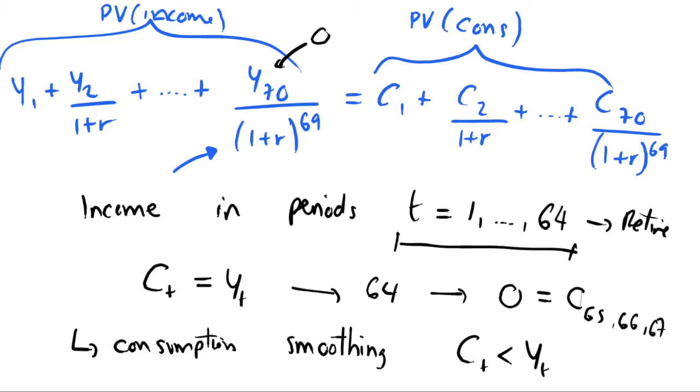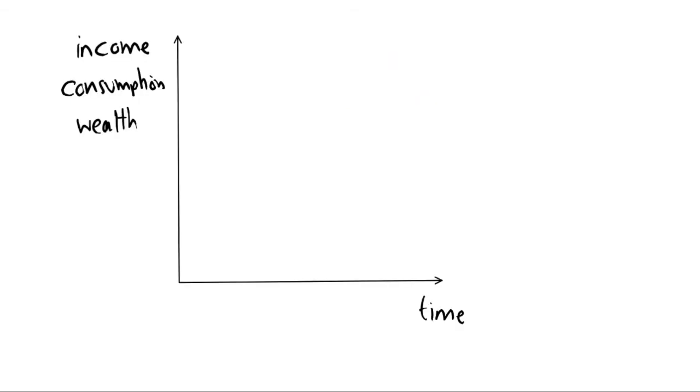And that's sort of the thought process behind this life cycle hypothesis, is that we smooth our consumption. Even in period one we want to be saving some of that money for the future, and we can think of that as putting money into a pension or a savings account, and it replicates reality at least to some extent.